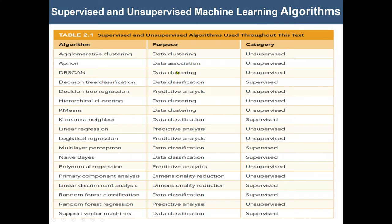Here we have the Apriori algorithm for data association, DBSCAN for data clustering — both unsupervised. Decision tree classification is supervised. We also have decision tree regression — regression is where the target variable we want to predict is quantitative data, whereas decision tree classification predicts nominal data like true or false, yes or no. We have Naive Bayes and logistic regression for predictive analysis, K-means for clustering (unsupervised), and K-nearest neighbors for data classification (supervised).